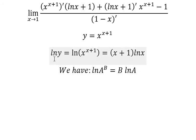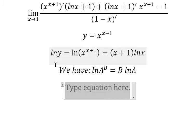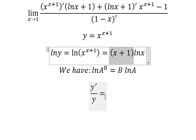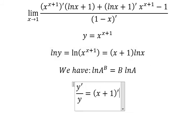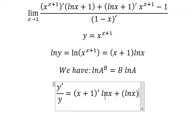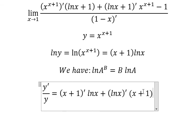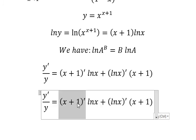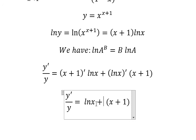Now we need to do the first derivative of both sides. The first derivative of the left side gives us the first derivative of y over y. Next, we apply the product rule for the right side: for x plus one multiplied by ln(x). The coefficient gives us two, here we have one, and here we have one over x.